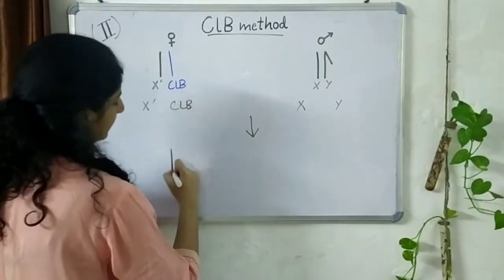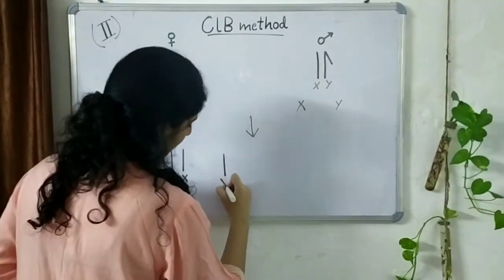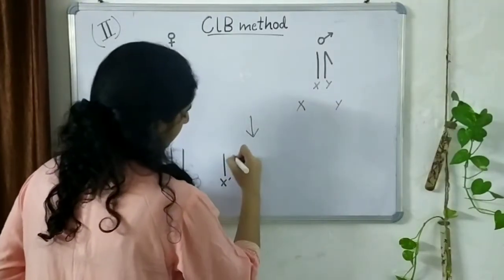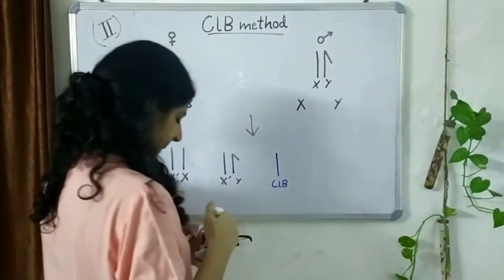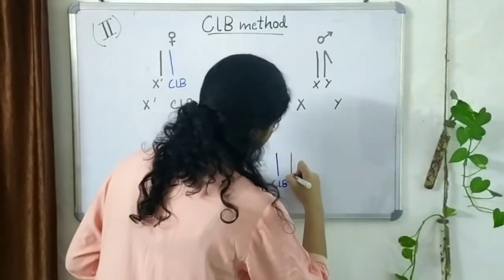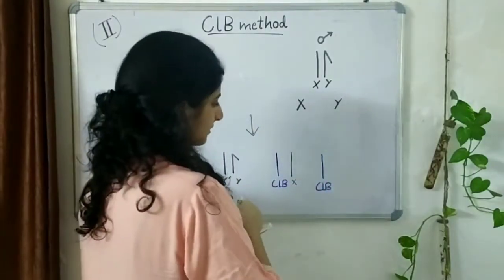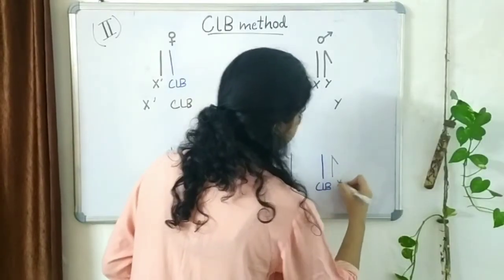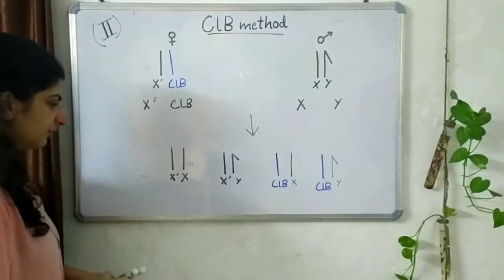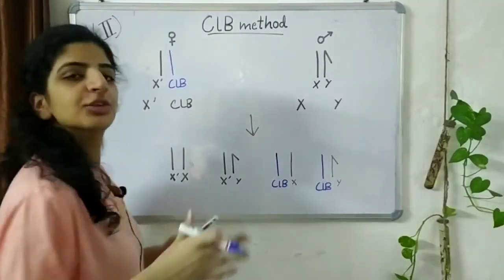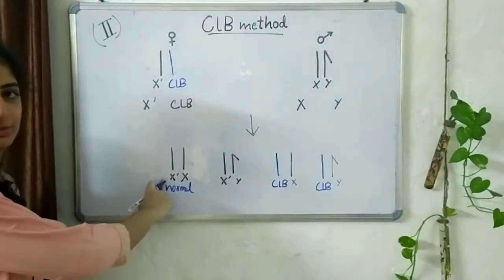The first one is that the X dash combines with the normal X. The second one is that the X dash combines with the Y. The third possibility is that the CLB chromosome combines with the normal X and finally the CLB combines with the Y. Now, again let's look at each of these in detail. In the first one, there is an X dash and an X. Again, just as it happened before, this will be a normal female. No matter if this X dash is mutated or not.